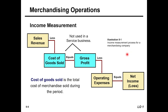Illustration 5-1 shows the income measurement process for a merchandising company. To summarize: a company earns Sales Revenue from selling goods; subtract Cost of Goods Sold to get Gross Profit; then subtract Operating Expenses to arrive at Net Income or Net Loss. Cost of Goods Sold is the total cost of merchandise sold during the period.